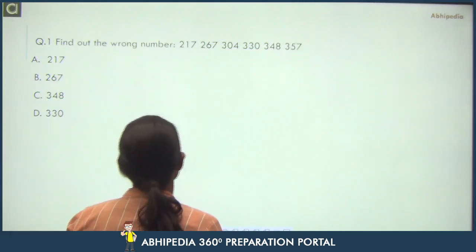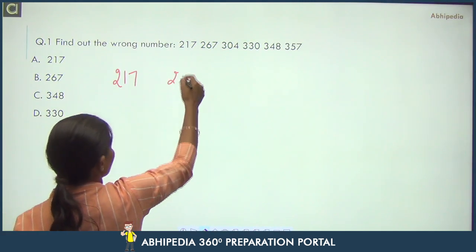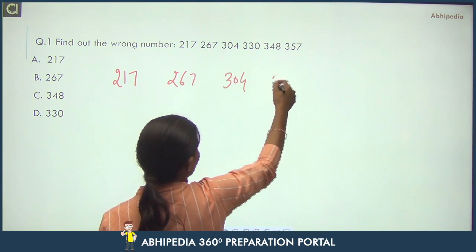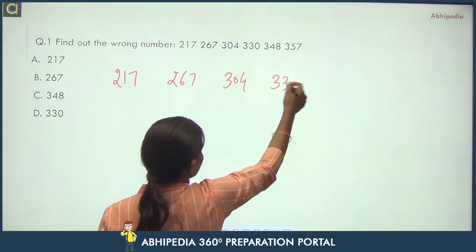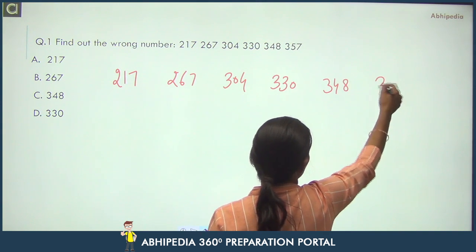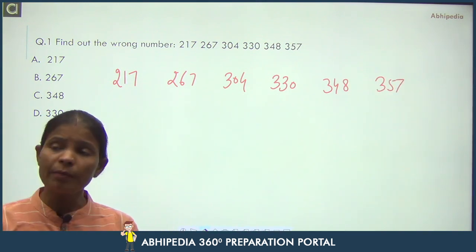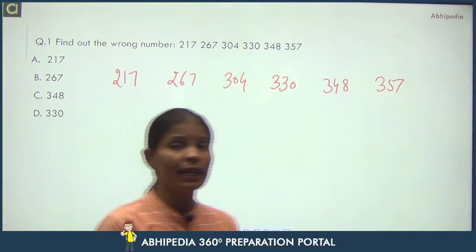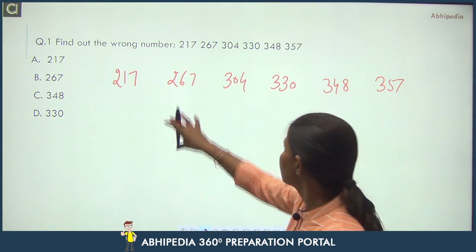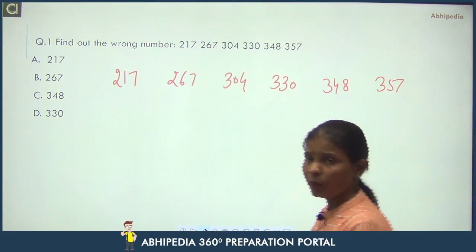The series is: 217, 267, 304, 330, 348 and 357. We will check what I told in the last class — first, check the difference. See how much the difference is. The series is increasing from smaller to bigger numbers.